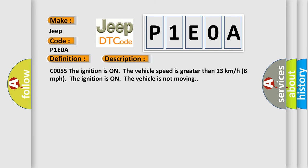C0055 The ignition is on, the vehicle speed is greater than 13 km per hour (8 mph). The ignition is on, the vehicle is not moving.